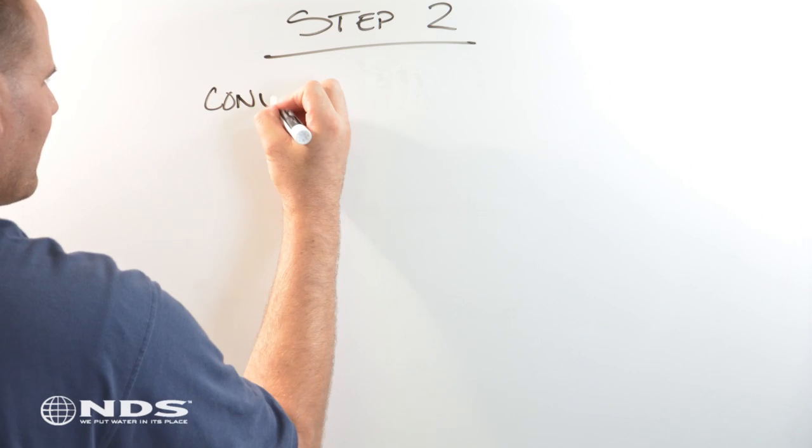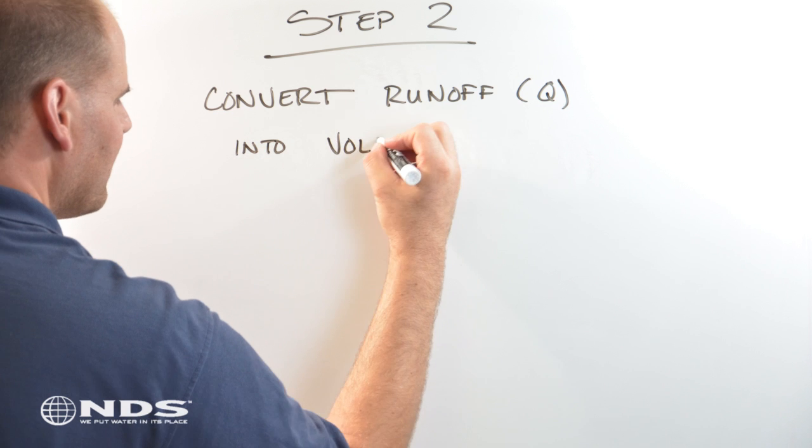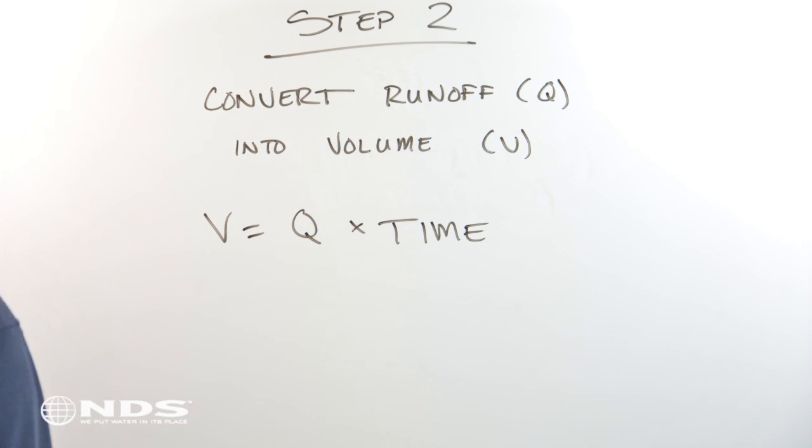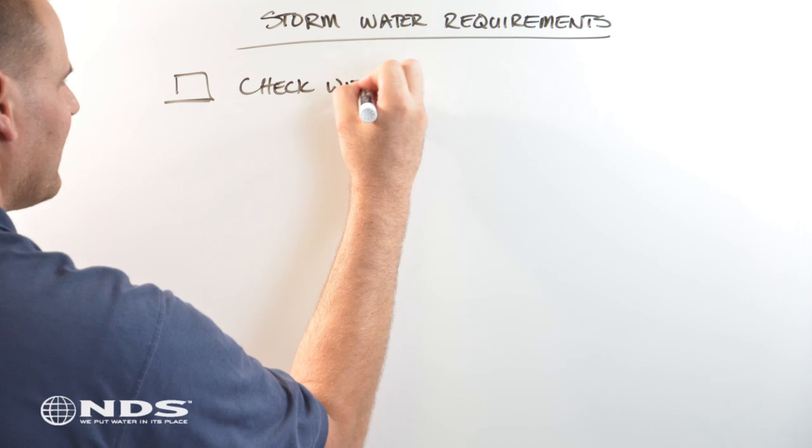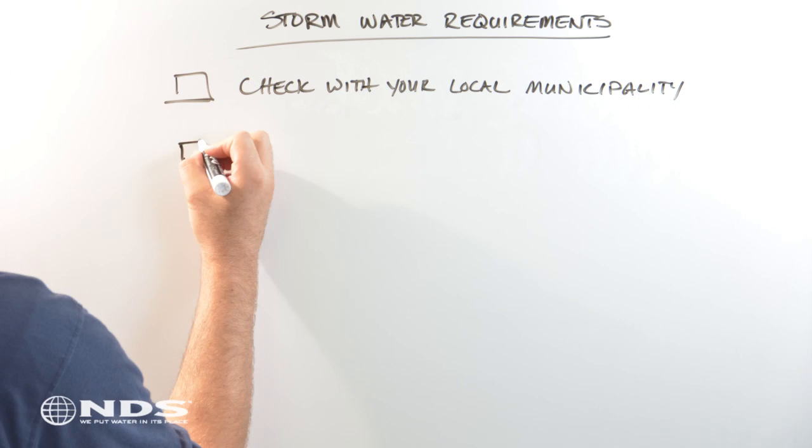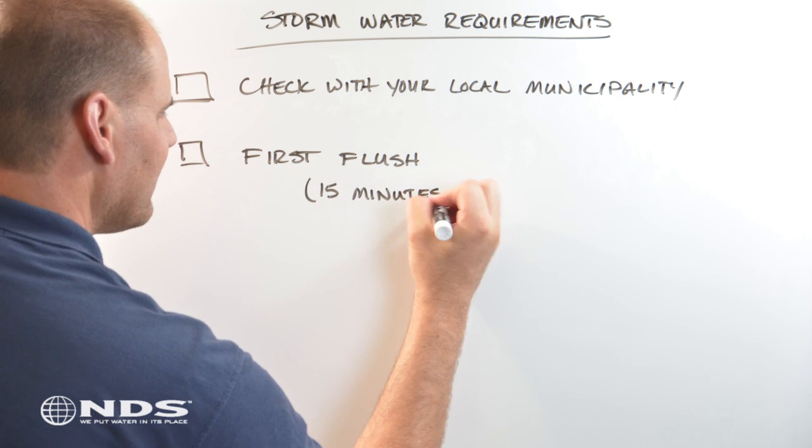Now that we have calculated the stormwater runoff, we need to convert the runoff into volume. To do this, we multiply the runoff by the length of time in minutes that we are collecting the runoff. Check the stormwater requirements in your municipality. They will let you know how much water you must store on your property, and how much water you are allowed to release to the public storm system.